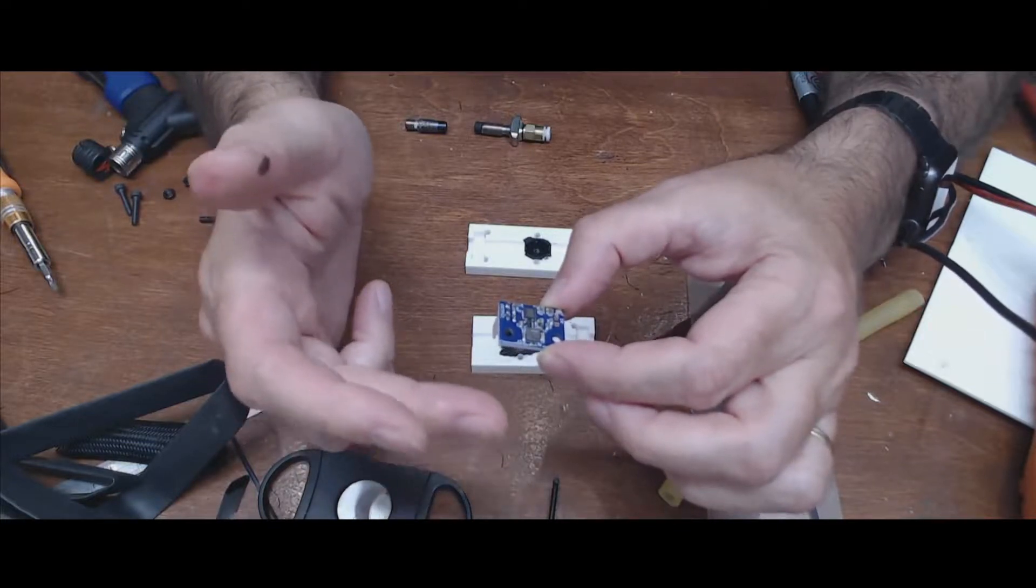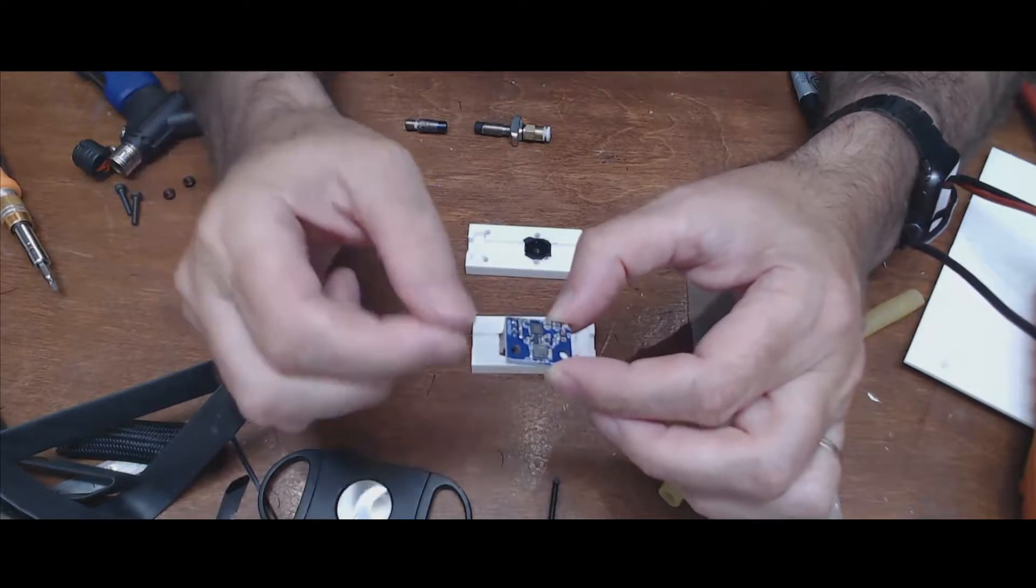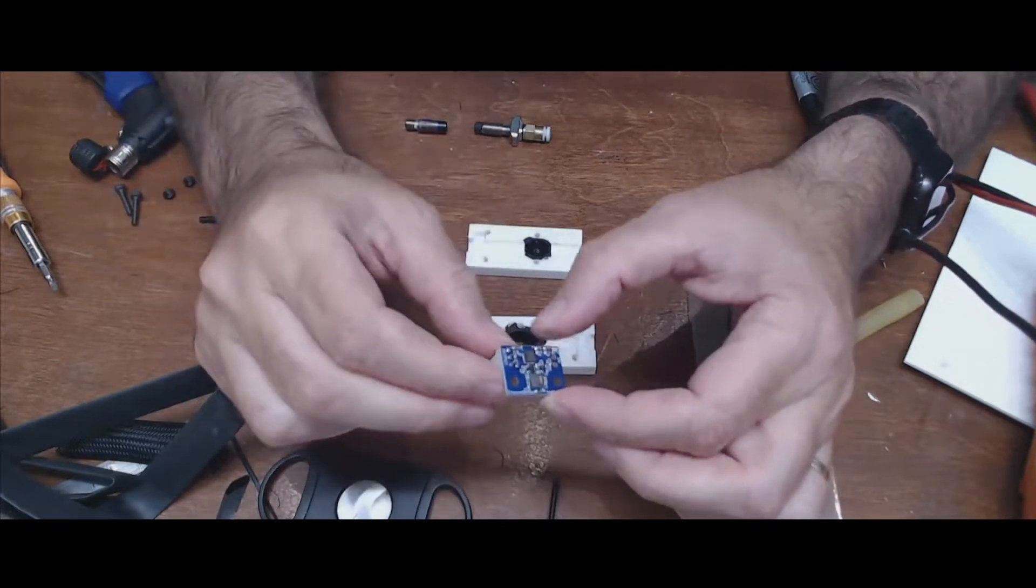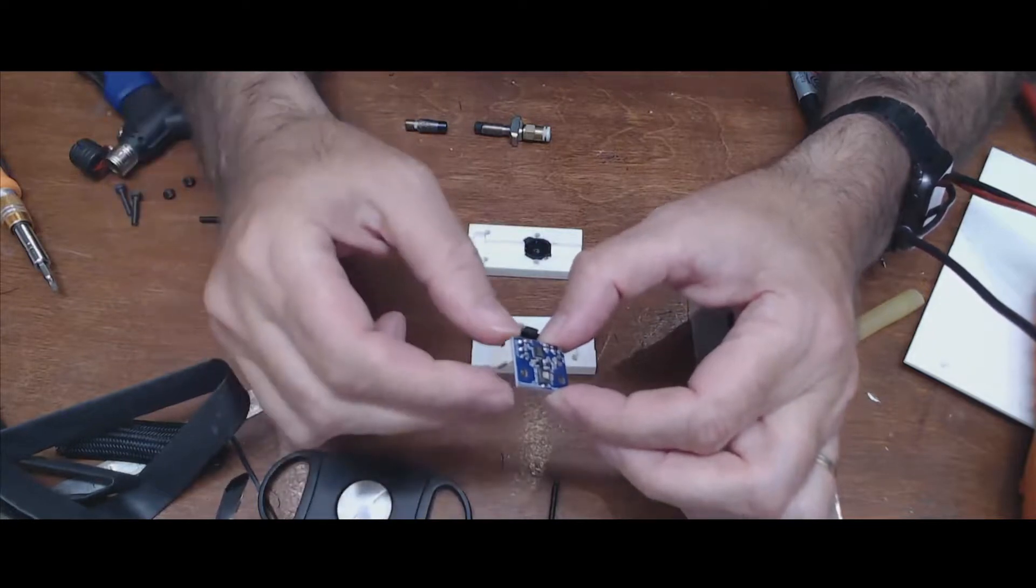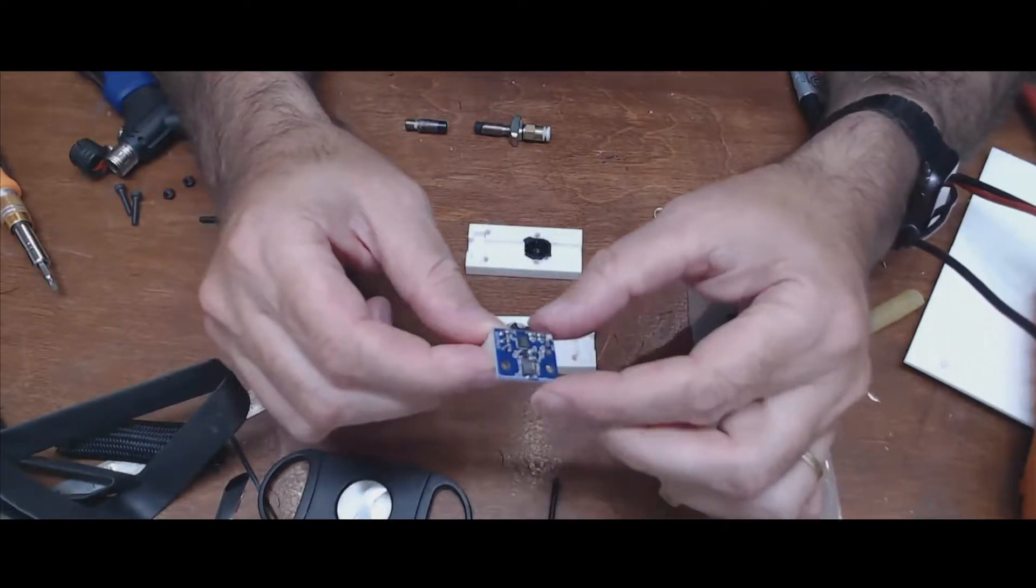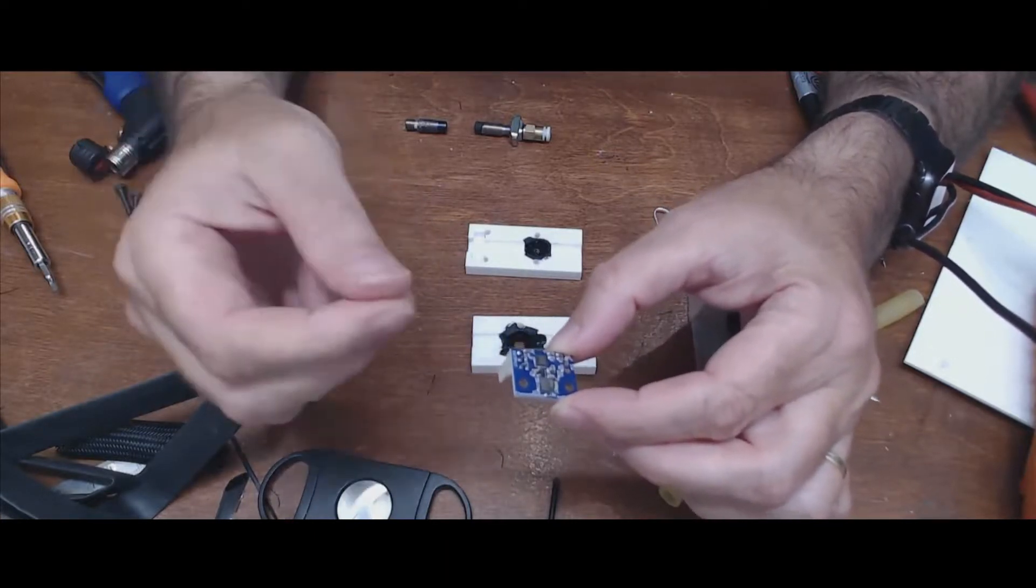At that point, I would like to be able to retract the filament back through the sensor and feed in a new piece. The problem with the original case was that the openings are so small that the filament would pretty much always jam.